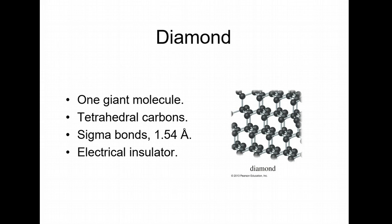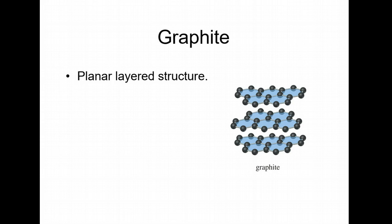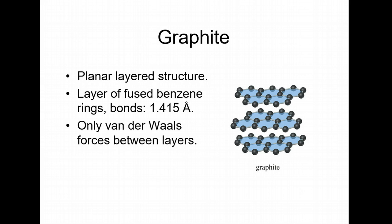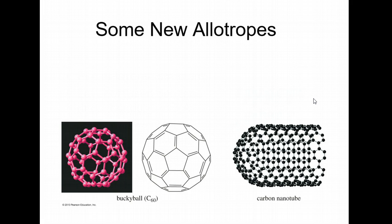They are tetrahedral carbons or sp3 hybridized carbons. It's an electrical insulator, meaning it does not carry electricity through it. Here's graphite: planar layered structures, so you got a bunch of these structures piled on top of each other. Layers are fused. They're held together by van der Waals forces, which would make sense because you have non-polar bonds. They do conduct electricity. Graphene, which is a single one of these - imagine if you take graphite and you just strip away all the layers until you get one single layer, that's what graphene is.